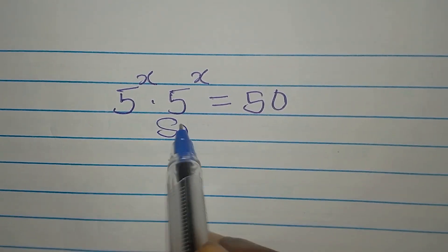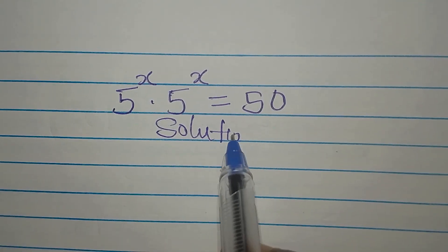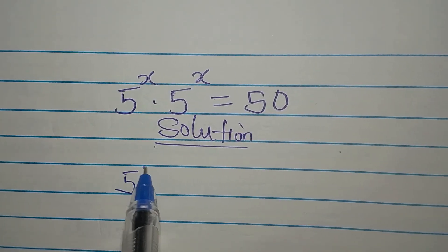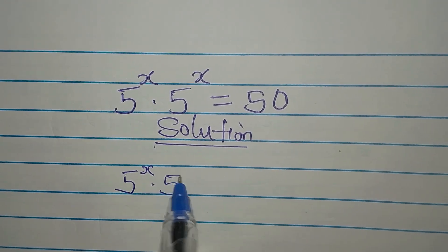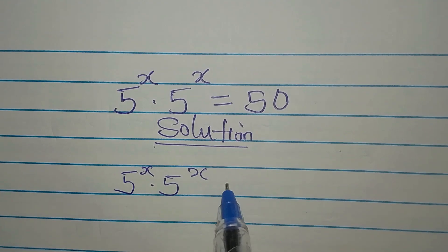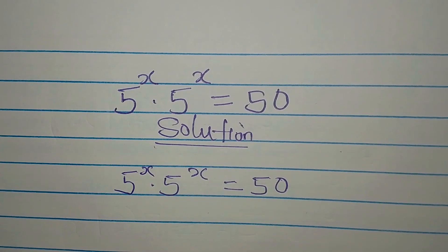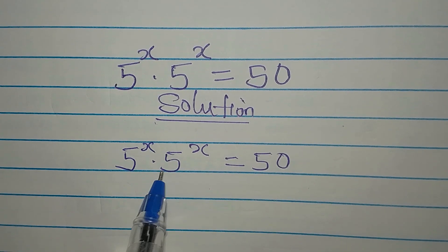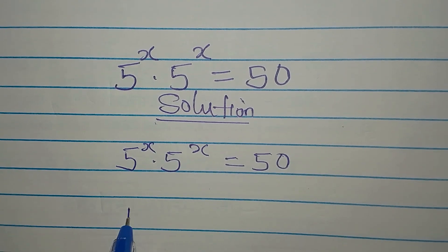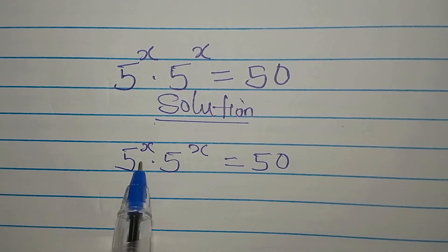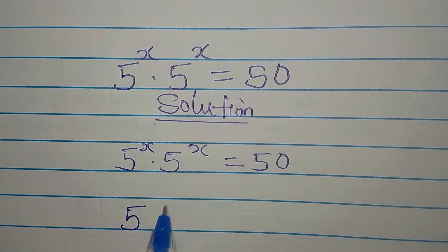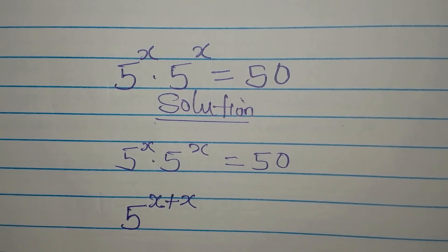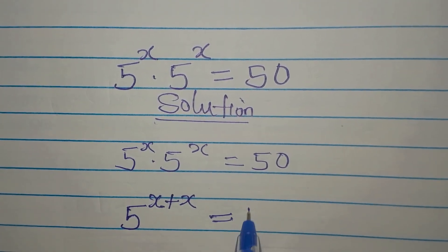Hi everyone, let's provide a solution to this problem: 5 to the power of x multiplied by 5 to the power of x equals 50. The first step is that 5 to the power of x times 5 to the power of x is the same as 5 to the power of x plus x, and this is equal to 50.